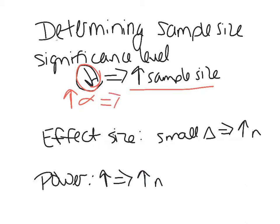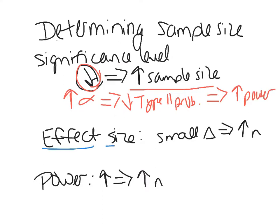When you increase alpha, you decrease your type 2 error probability, which means you increase the power of the test. Keep that in mind when determining what sample size is appropriate. The other thing to consider is effect size — how big is the difference between my null parameter value and my actual parameter value that's important to detect? If it's important for me to detect a small change — like in medicine testing — then I need a bigger sample size.